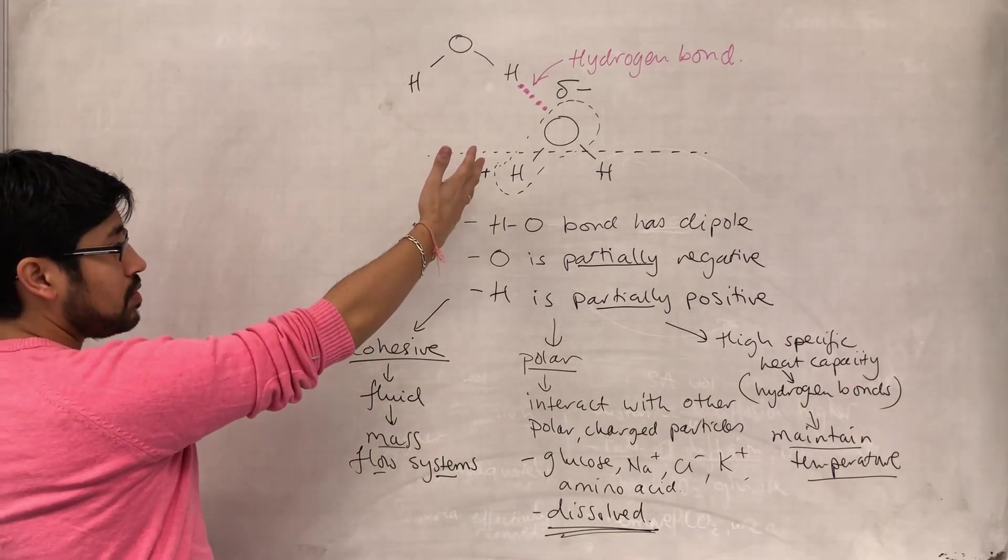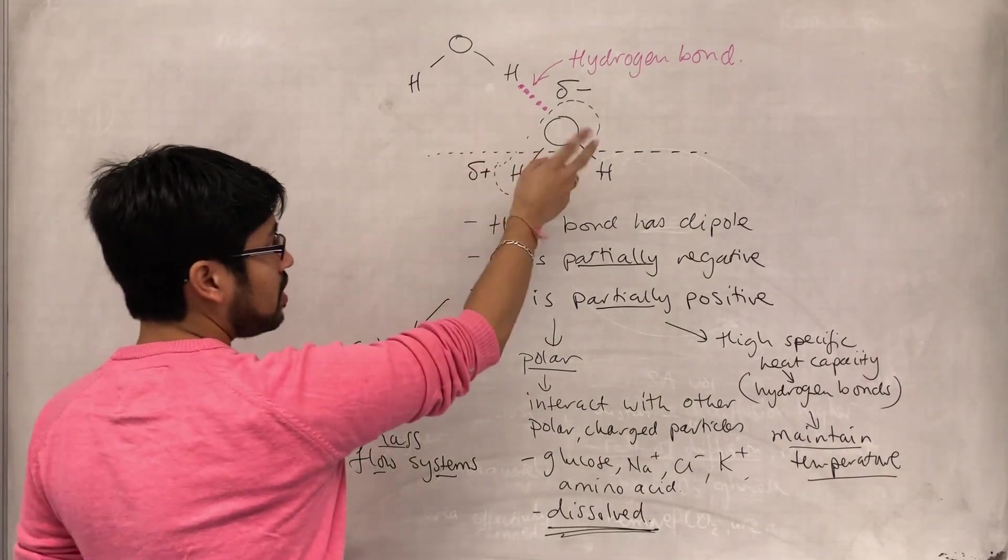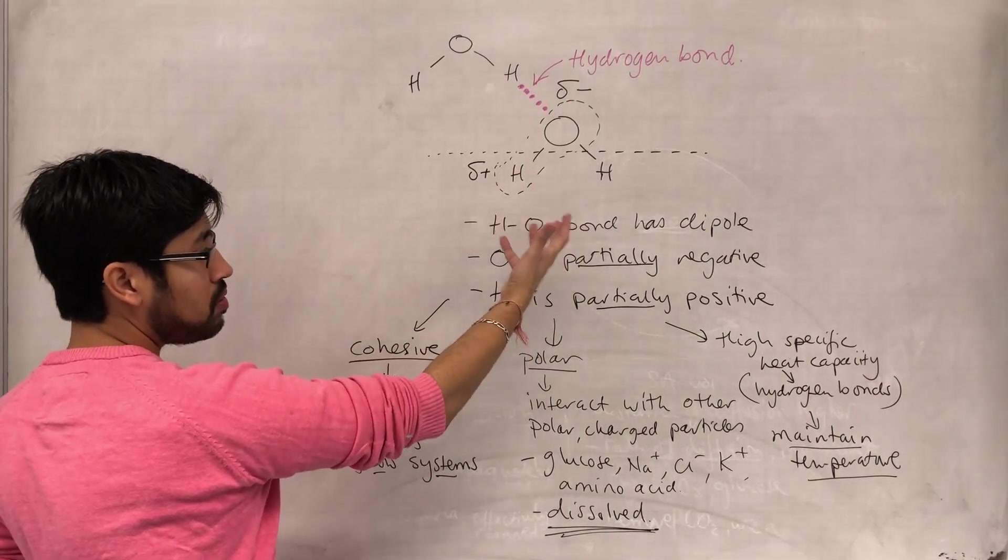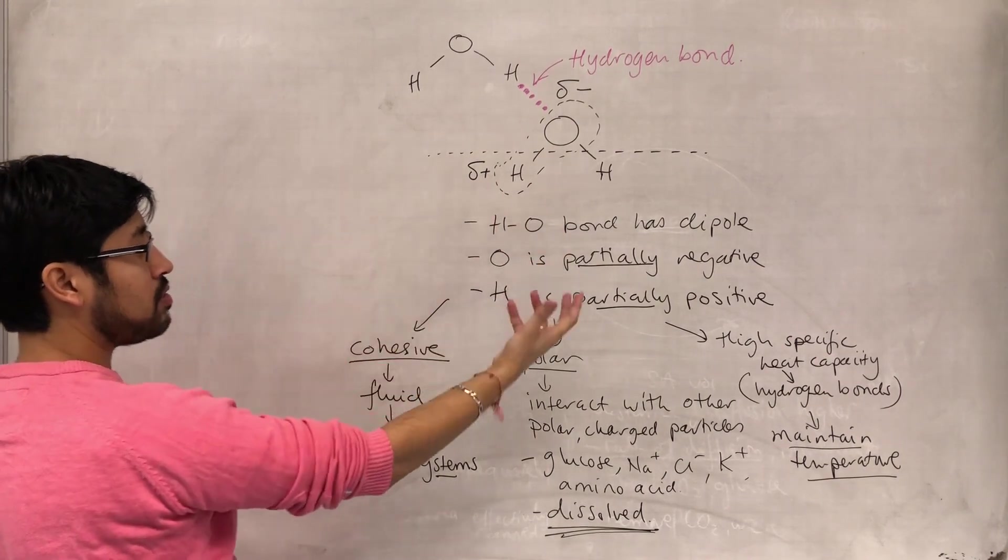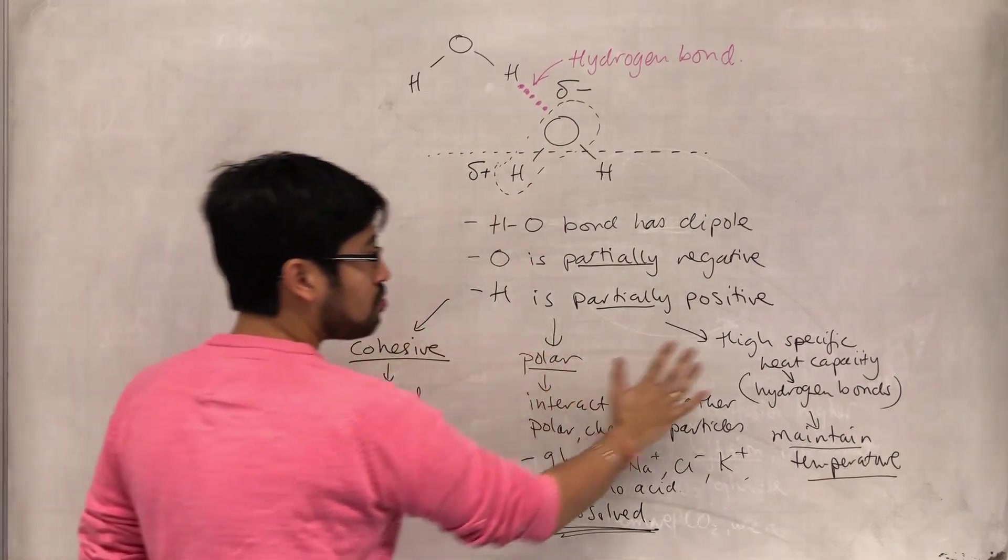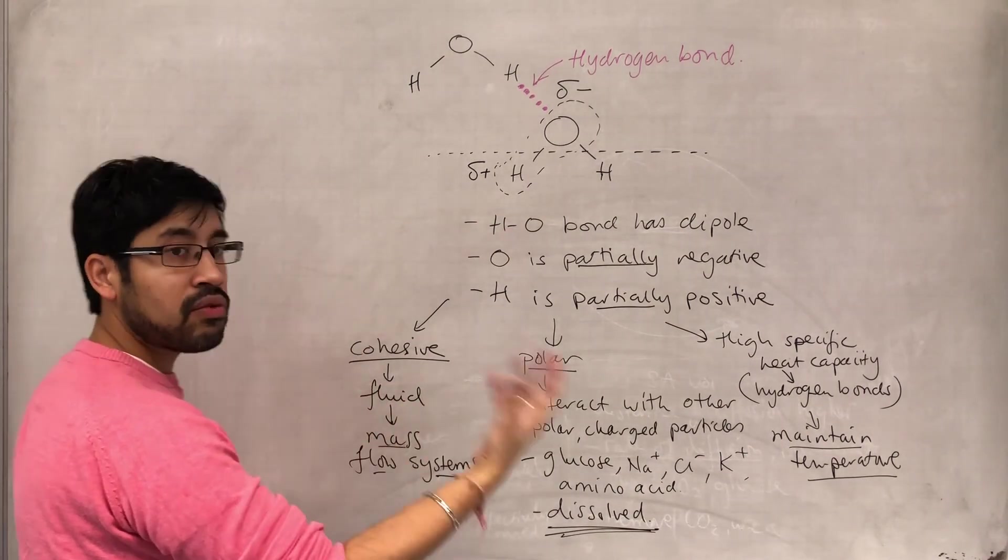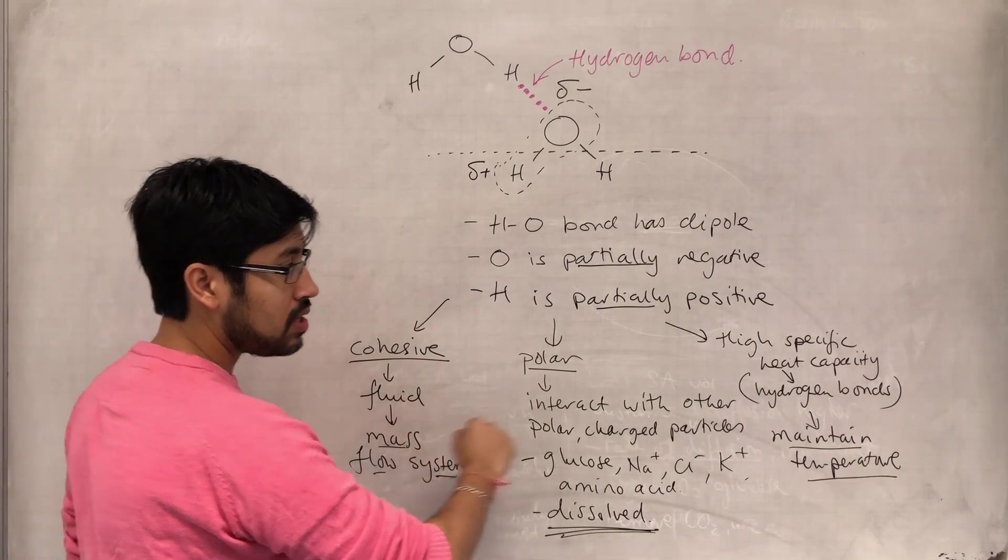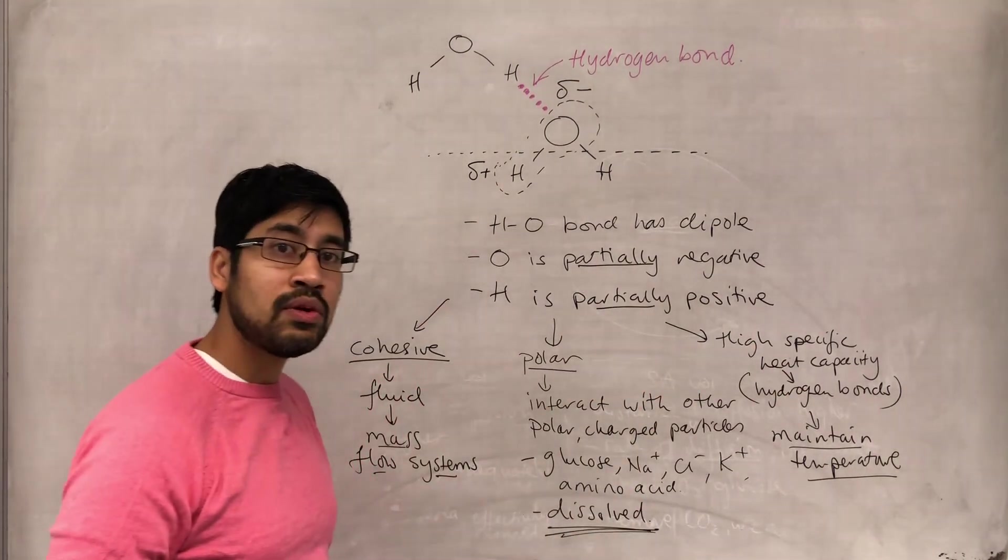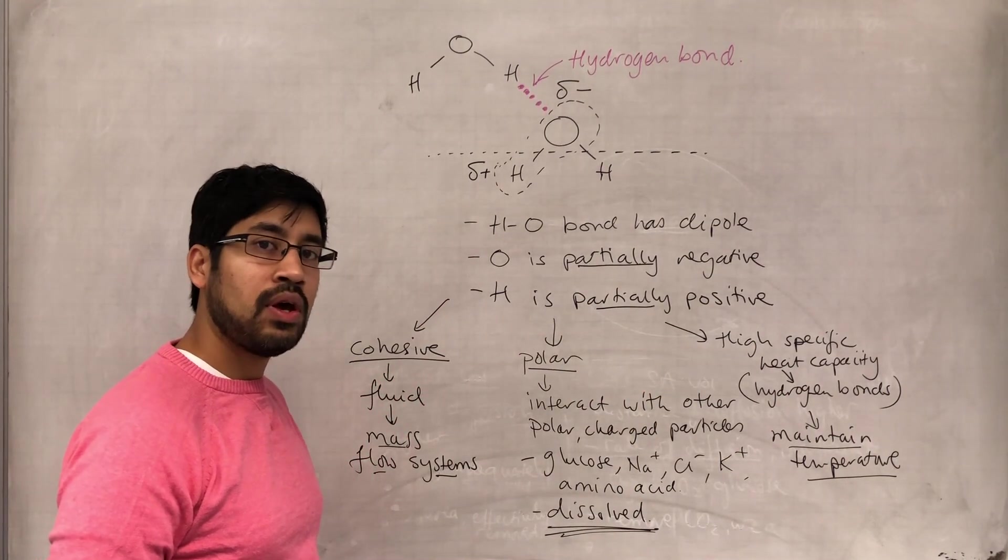So water structure results in this dipole nature, and because of the dipole nature, it can hydrogen bond. And because of the hydrogen bonding then, it has these properties which are then related to its function. Mass flow systems, dissolving things, and maintaining the organism's temperature.